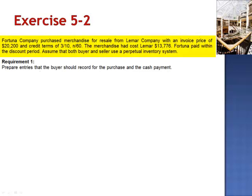Exercise 2. Fortuna Company purchased merchandise for resale from Lamar Company with an invoice price of $20,200 and credit terms of 3%, net 60. The merchandise had cost Lamar $13,776. Fortuna paid within the discount period. Assume that both the buyer and the seller use a perpetual inventory system.